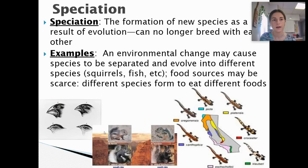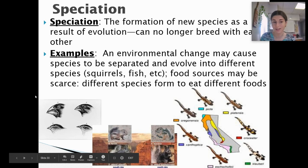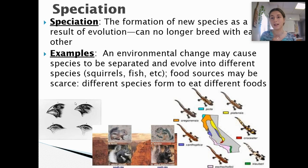There's one more thing — speciation, which is the formation of a new species as a result of evolution. These species can no longer breed or mate with each other. An environmental change may cause species to be separated and evolve into different species. Darwin went to the Galapagos Islands and found these finches — Darwin's Galapagos finches — that all had different sized beaks.